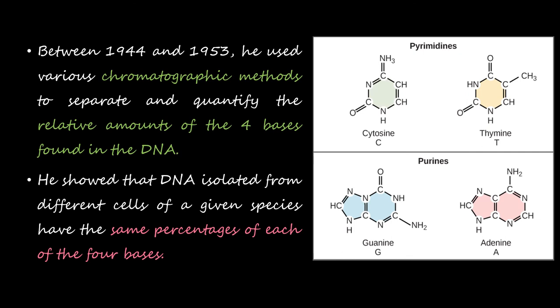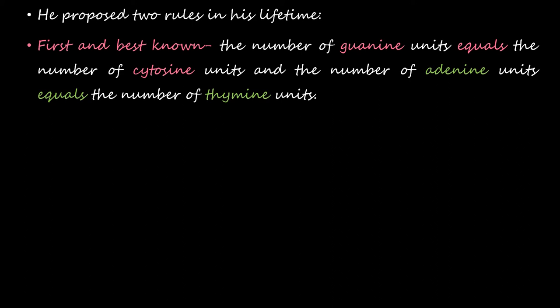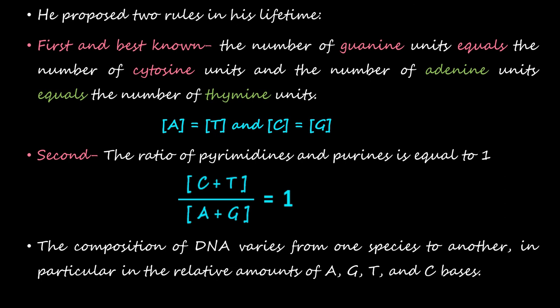He showed that DNA isolated from different cells of a given species have the same percentages of each of the four bases. He proposed two rules in his lifetime: First and best known, the number of guanine units equals the number of cytosine units, and the number of adenine units equals the number of thymine units, so A equals T and C equals G. Second, the ratio of pyrimidines and purines is equal to one, so C plus T upon A plus G equals one.